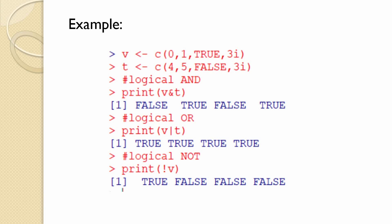For logical NOT, it is only applicable for one vector. If an element is true and we apply logical NOT, the output becomes false. Applying logical NOT to vector V: the first element is 0 (less than 1, false), so NOT gives true. The next element is 1 (greater than 0), so NOT gives false. The next element is TRUE, so NOT gives false. Finally, 3i is greater than 1 (true), so NOT gives false.